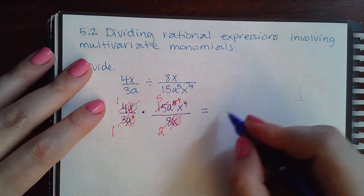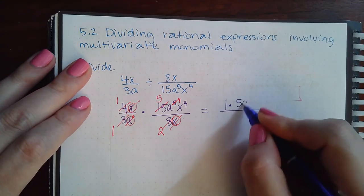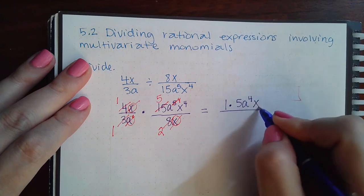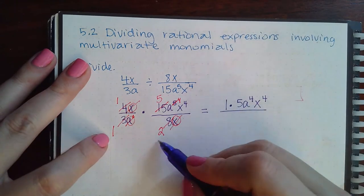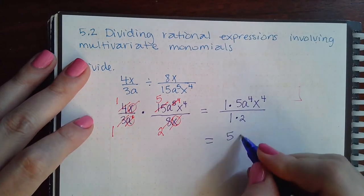So what do we have left? We have one times five and a to the fourth power and x to the fourth power, and at the bottom we have one times two. If I just clean that up, it's five a to the four x to the four over two.